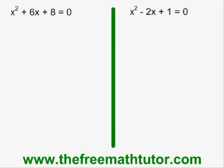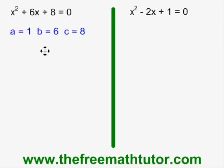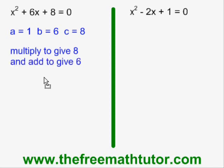When we are asked to solve a quadratic equation by factoring, one of the factoring methods we might need to use is the simple trinomial method. Both of these examples require this method. In the example on the left, I define my a, b, and c, and I ask the question: what two numbers multiply to give c and add to give b? In this case, what two numbers multiply to give 8 and add to give 6? Those two numbers are 4 and 2.